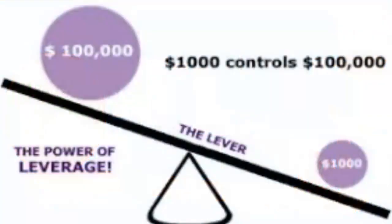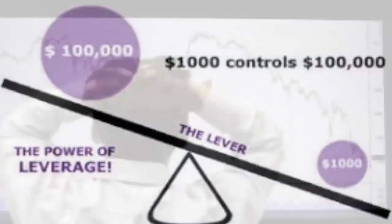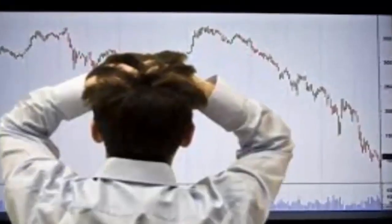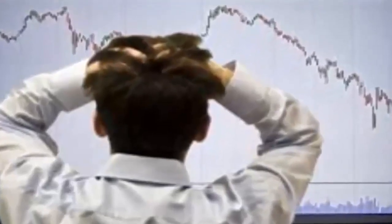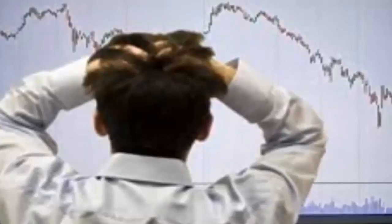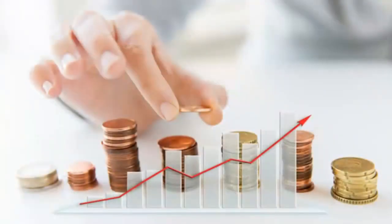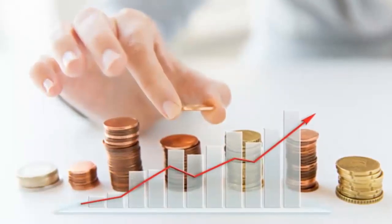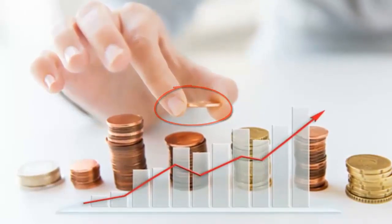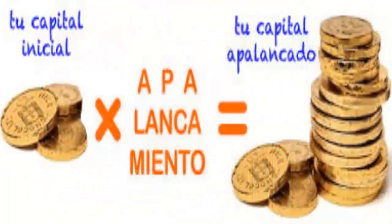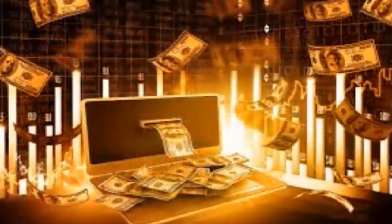Teóricamente, con un apalancamiento de 1 a 100, si tenemos 10.000 dólares, podríamos ganar en una operación 1.000.000 de dólares. Sin embargo, el precio nunca se mueve en línea recta y puede retroceder tanto que si uno usa todo el apalancamiento que permite el broker, pierdes todo tu capital. El apalancamiento que nos permite el broker facilita la posibilidad de empezar a operar y hacer trading sin grandes cantidades de dinero. Con un capital de 10.000 dólares uno puede estar ganando entre 500 a 1.000 dólares mensuales con un sistema ganador y una buena gestión de capital.